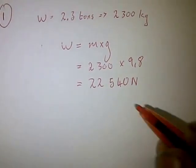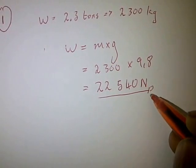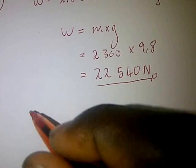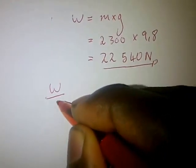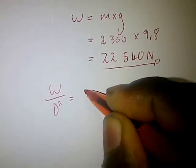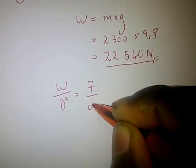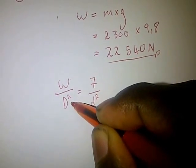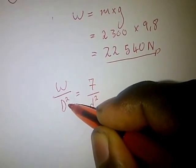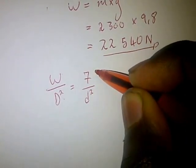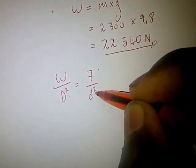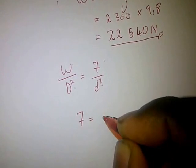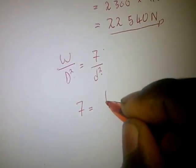This weight is the force on the ram side. To calculate the force on the plunger, we use the area ratio formula: W over D-ram squared equals F-plunger over D-plunger squared. So we rearrange to find the force on the plunger side.